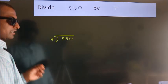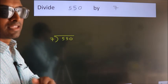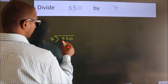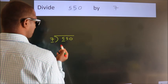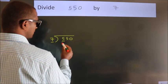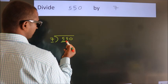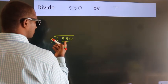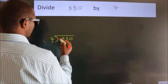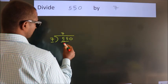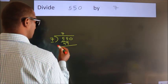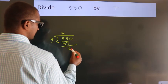This is your step 1. Next, here we have 5 and here 7. Since 5 is smaller than 7, we should take two numbers: 55. A number close to 55 in the 7 times table is 7 sevens 49. Now we subtract, we get 6.